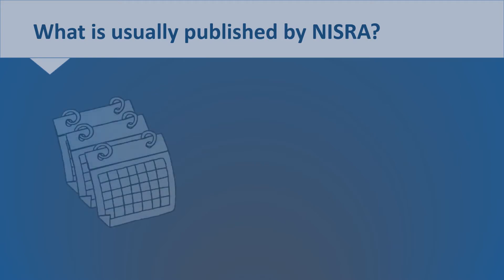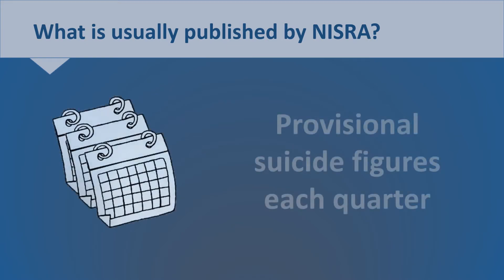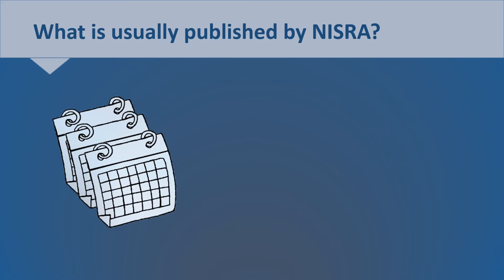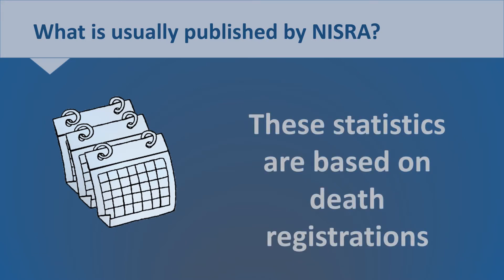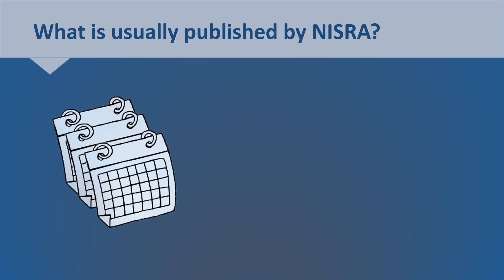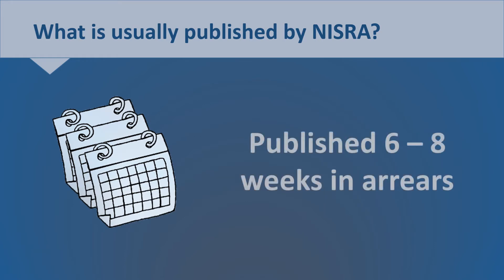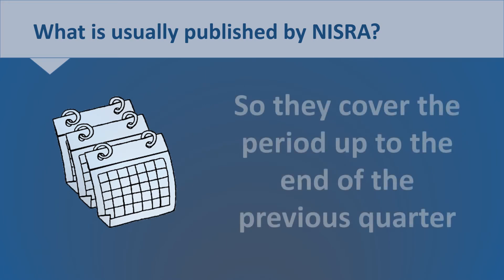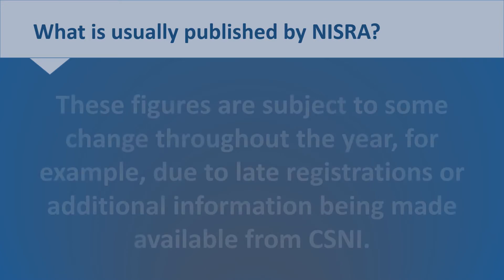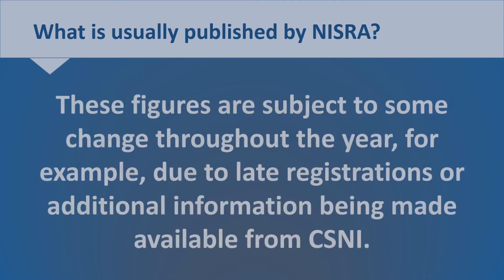These are routinely published provisional suicide figures on a quarterly basis. These statistics are based on death registrations and are published six to eight weeks in arrears, so they cover the period up to the end of the previous quarter. These figures are subject to some change throughout the year, for example, due to late registrations or additional information being made available from the Coroner Service for Northern Ireland.